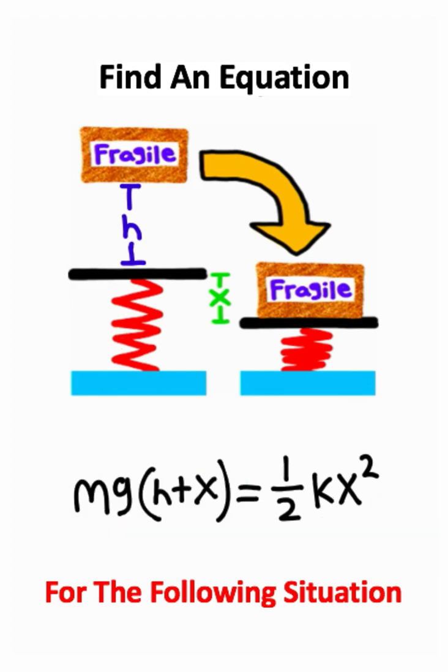H prime is going to be equivalent to H plus X, because it's going to be the height we drop down plus the displacement right here.